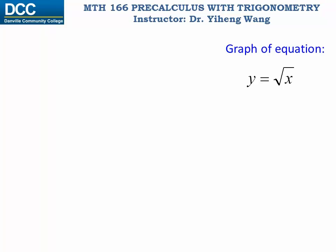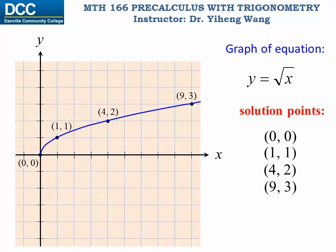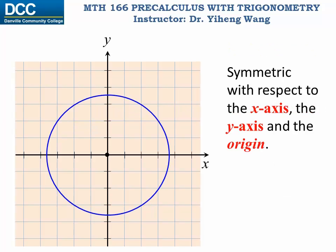Of course, there are equations that don't follow any of these algebraic rules. If we sketch the graph of such an equation, we can see it is not symmetric about any line or point. And some graphs — like the graph of a circle, whose equation will be discussed in the next video — are symmetric about the x-axis, the y-axis, and the origin.